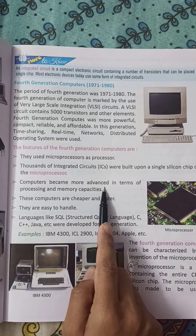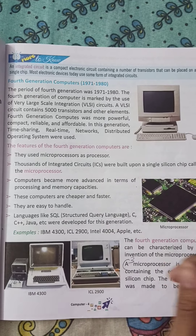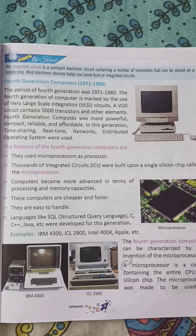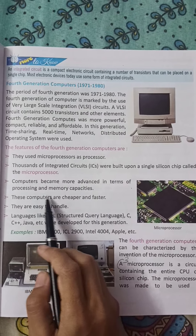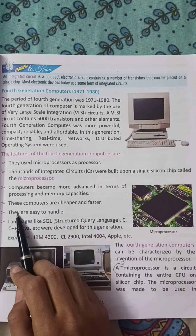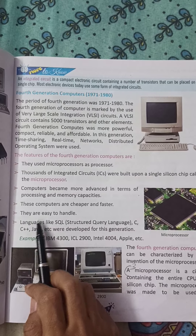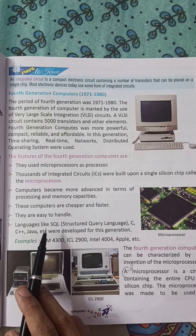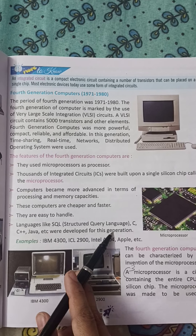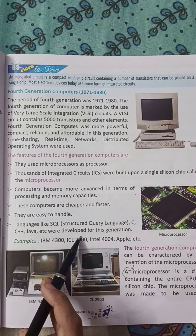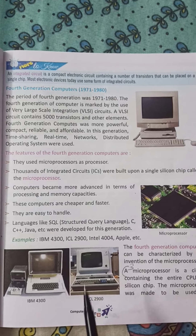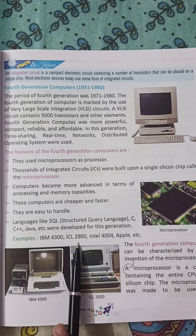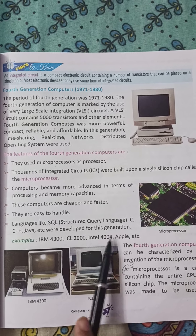Computers became more advanced in terms of processing and memory capacities. These computers were cheaper and faster, and easy to handle. Languages such as SQL (Structured Query Language), C, C++, Java, etc. were developed for this generation. Examples include IBM 4300, ICL 2900, Intel 4004, and Apple.